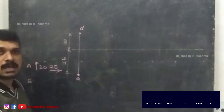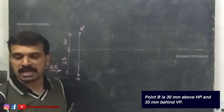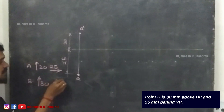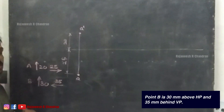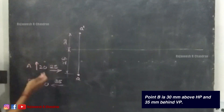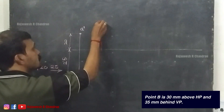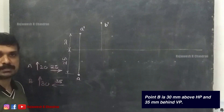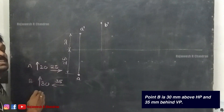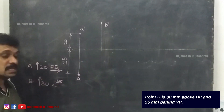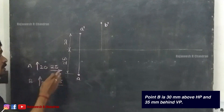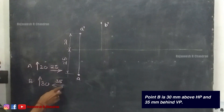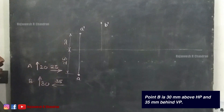The second question: point B is 30mm above HP and 35mm behind VP. Above HP means above the XY line, so mark the point at a distance of 30 above the XY line and name it B dash. Now, it is behind VP. If it were in front of VP, we would draw below the XY line. Since it is behind VP, we use the opposite direction — that means 35mm above the XY line — and mark it as B.